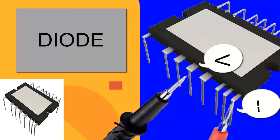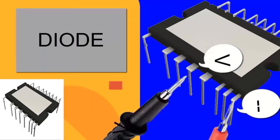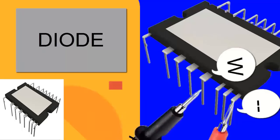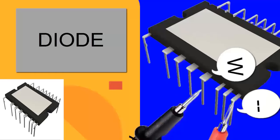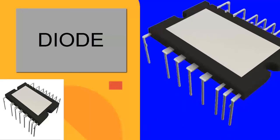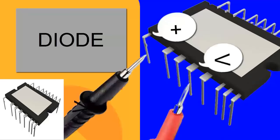C. Place the red probe of the multimeter on the negative ground pin of the IPM. Then, using the black probe, measure the U, V, and W terminals of the IPM module sequentially. The readings for all three phases, U, V, and W, should be almost identical. Any significant disparity could indicate a fault in the module.